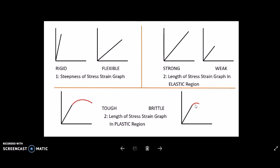So keep these three points in mind: number one, steepness of the stress-strain graph shows whether the material is rigid or flexible; number two, the length of the stress-strain line within the elastic region shows whether the material is strong or weak; number three, the length of the stress-strain curve in the plastic region — longer means tougher, shorter means more brittle.